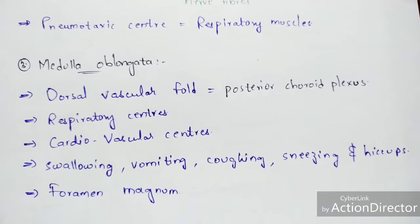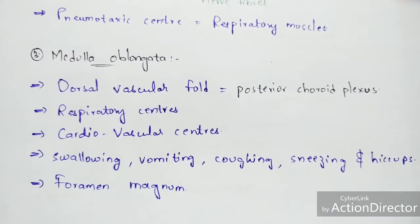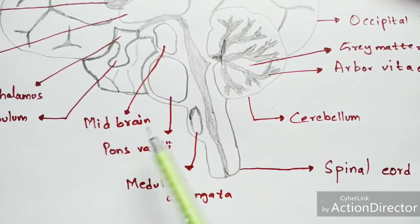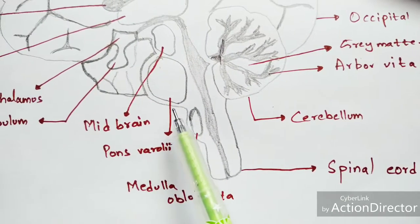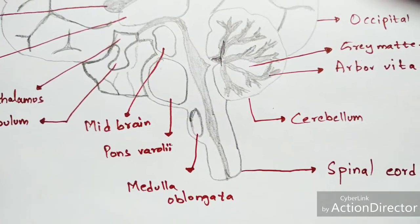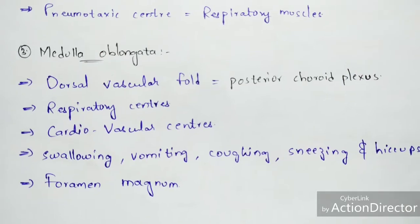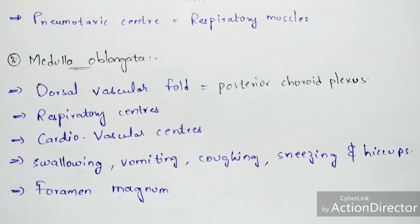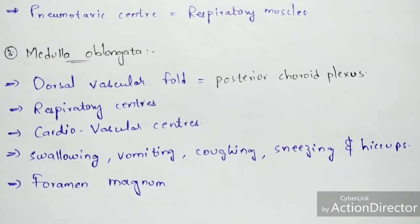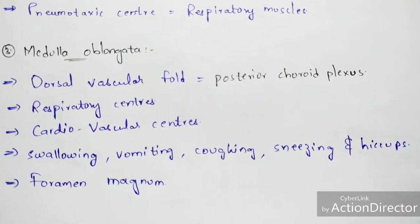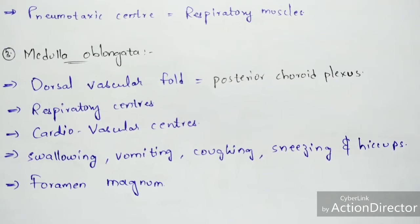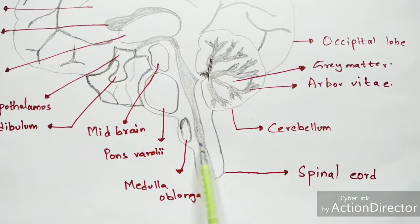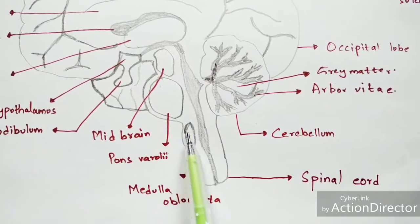The medulla oblongata is the posteriormost part of the brain. It extends from the pons Varolii and continues as the spinal cord. It consists of a dorsal vascular fold known as the posterior choroid plexus, and it also contains cardiovascular and respiratory centers. It controls reflex actions like swallowing, vomiting, coughing, sneezing, and hiccups. The foramen magnum maintains the joint between the medulla oblongata and the spinal cord.